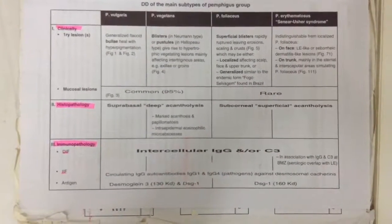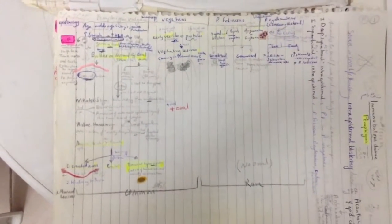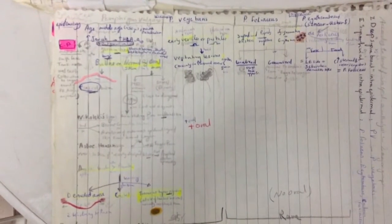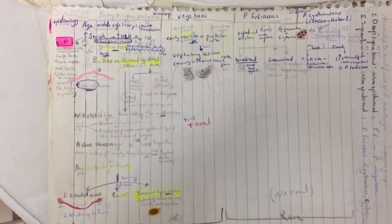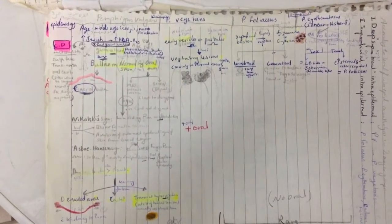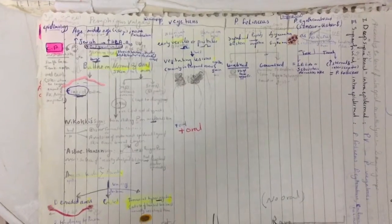Now we will talk about the clinical picture, histopathology, immunopathology, pathogenesis, and treatment of these diseases. Regarding the epidemiology of pemphigus vulgaris: it occurs in middle-aged patients with no sex predilection. It occurs more in Jewish patients and is associated with increased HLA-A10, BW38, and DR40.